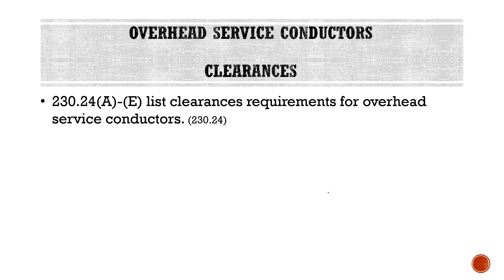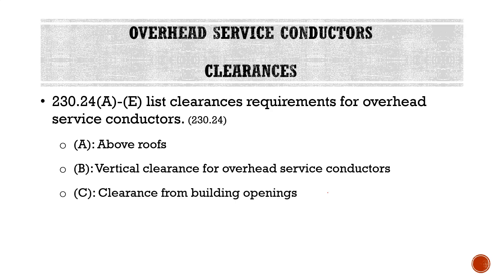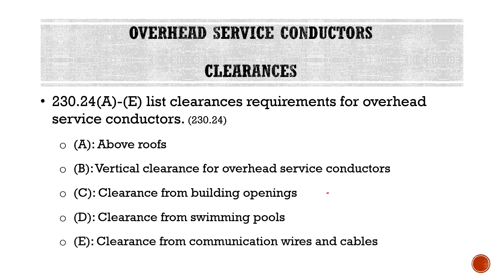Building on that idea, Section 230.24A through E lists clearance requirements for overhead service conductors. Part A covers above roofs; Part B covers vertical clearances for overhead service conductors; Part C covers clearances from building openings; Part D covers clearance from swimming pools; and Part E covers clearance from communication wires and cables.